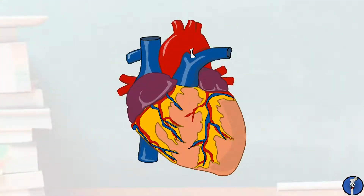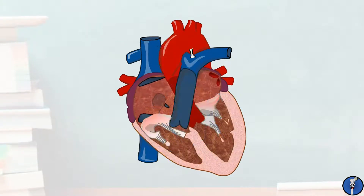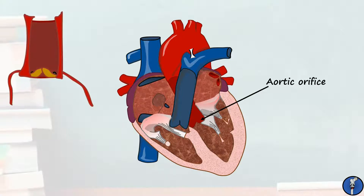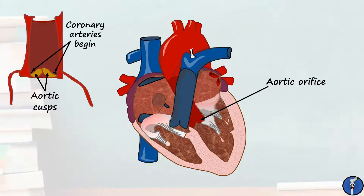The most famous of all of the great vessels is undoubtedly the mighty aorta. This huge elastic artery carries all of the oxygenated blood leaving the left side of the heart and travelling out towards the rest of the body. In healthy people, the aorta has a diameter of up to two centimetres — big enough to stick your thumb inside. The aorta begins at the base of the left ventricle in a region known as the aortic orifice, where there is a three-cusped valve that we'll discuss in more detail in a later episode. Remember that just distal to this valve is the origin of the coronary arteries.